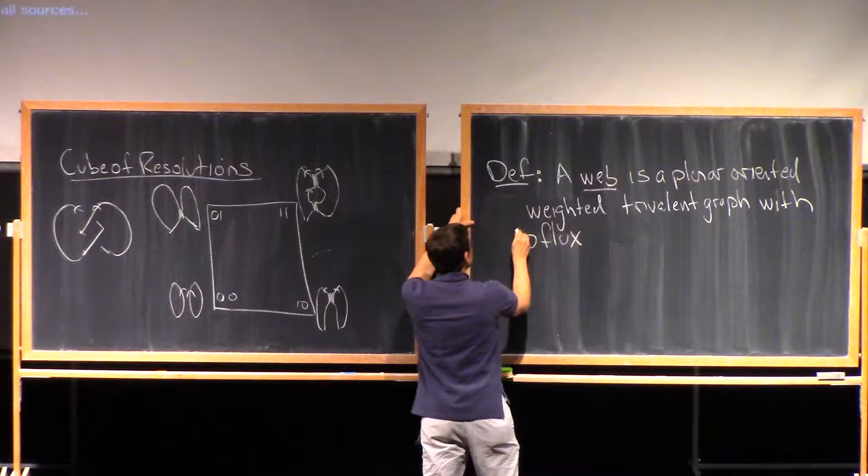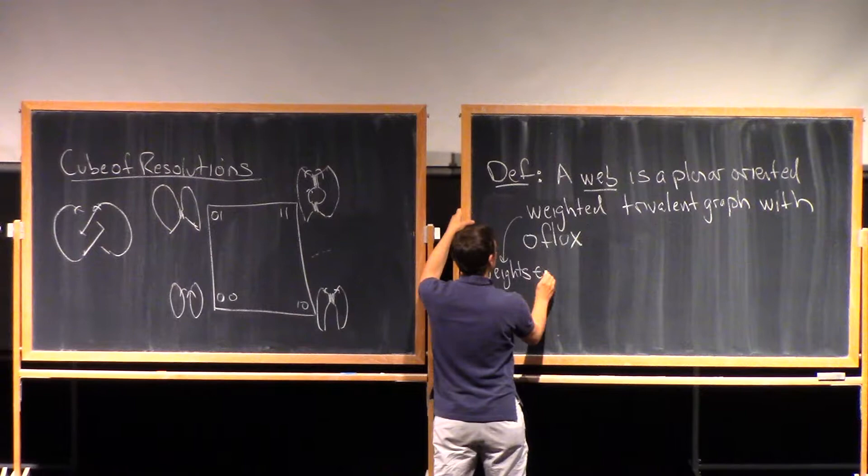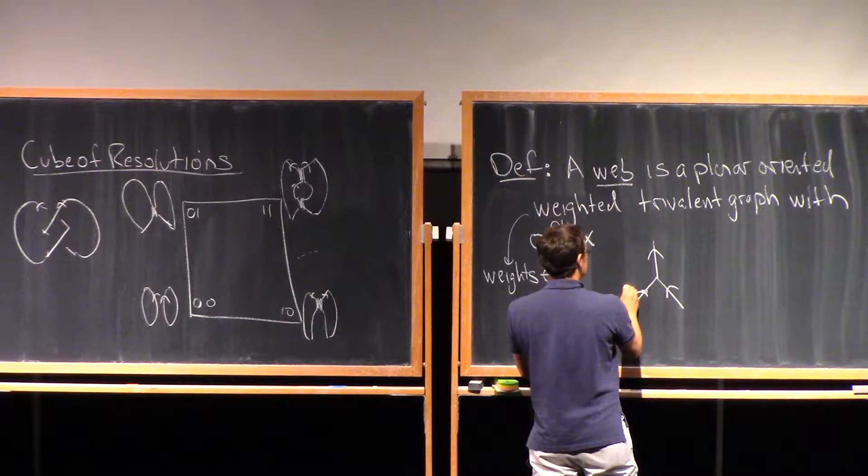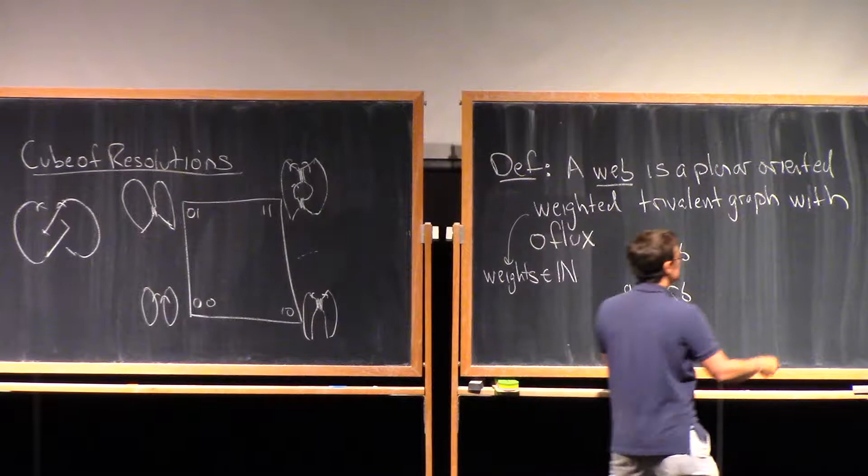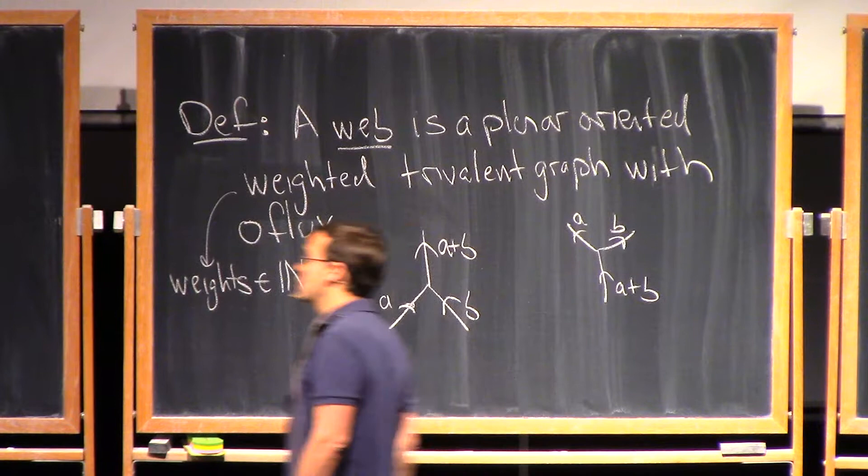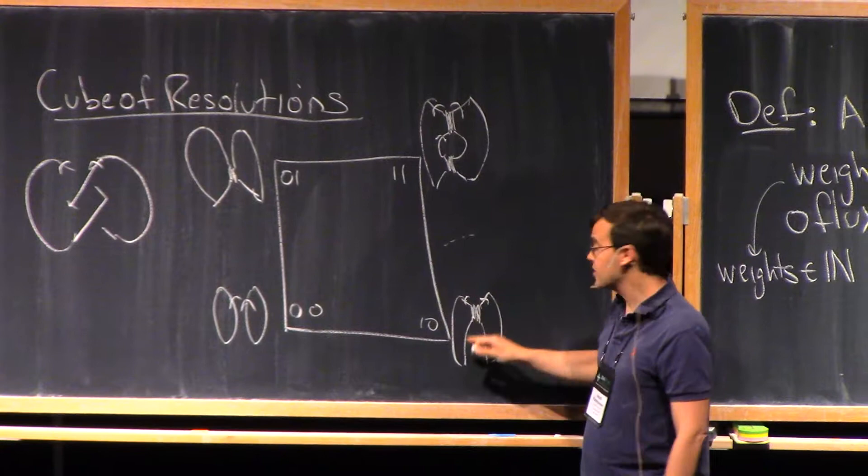I'll explain what that means in a second. The weights should be thought about in the natural numbers. And the condition that there's zero flux just means that if I have something that looks like here I have weights A and B, here I get a weight A plus B. Or here if I had weights A and B, this would be A plus B. And in particular, all of these pictures here are webs where the thick edges have weight two and all the other edges have weight one.